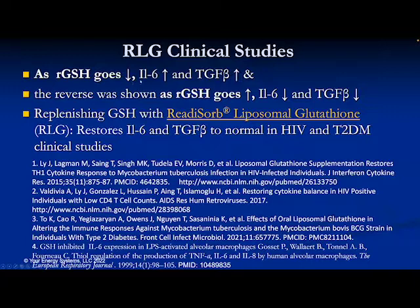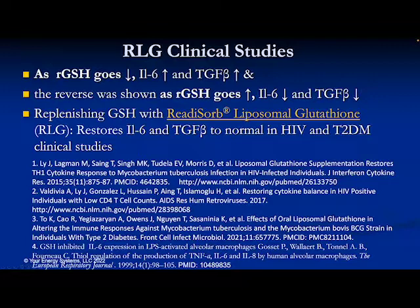In summary, as glutathione goes down, cytokines IL-6 and TGF-beta go up, and these two cytokines have been shown in studies to prevent the formation of glutathione. The reverse is shown when you replete glutathione using redisorb liposomal glutathione — you can reduce IL-6 and TGF-beta and restore them to normal in both HIV and type 2 diabetes. It remains to be seen if this works in COVID, although anecdotally, improvement without progression to severe disease has been reported, and we have anecdotal testimony showing the same in prolonged COVID.